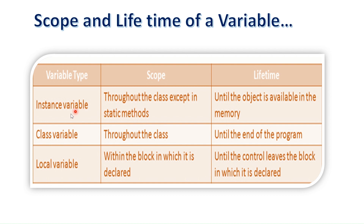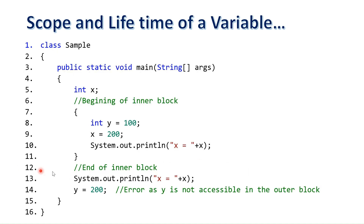The scope of the instance variable is throughout the class, except in static methods. The scope of the class variable is throughout the class. The scope of the local variable is within the block in which it is declared.